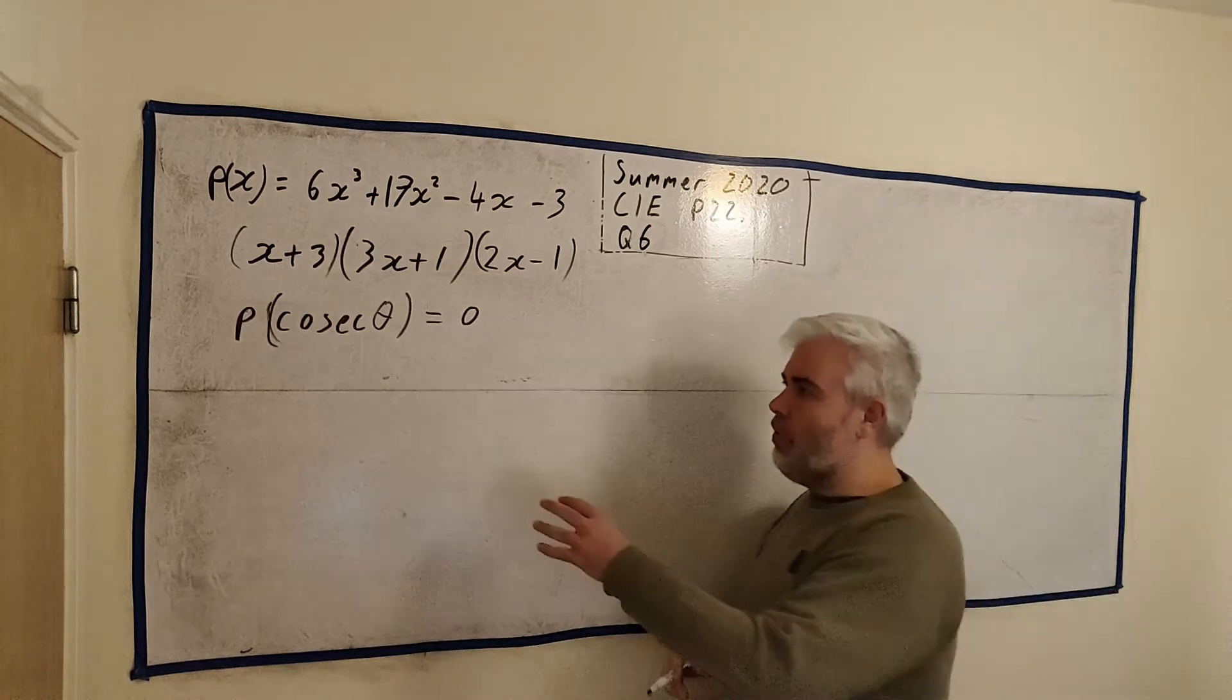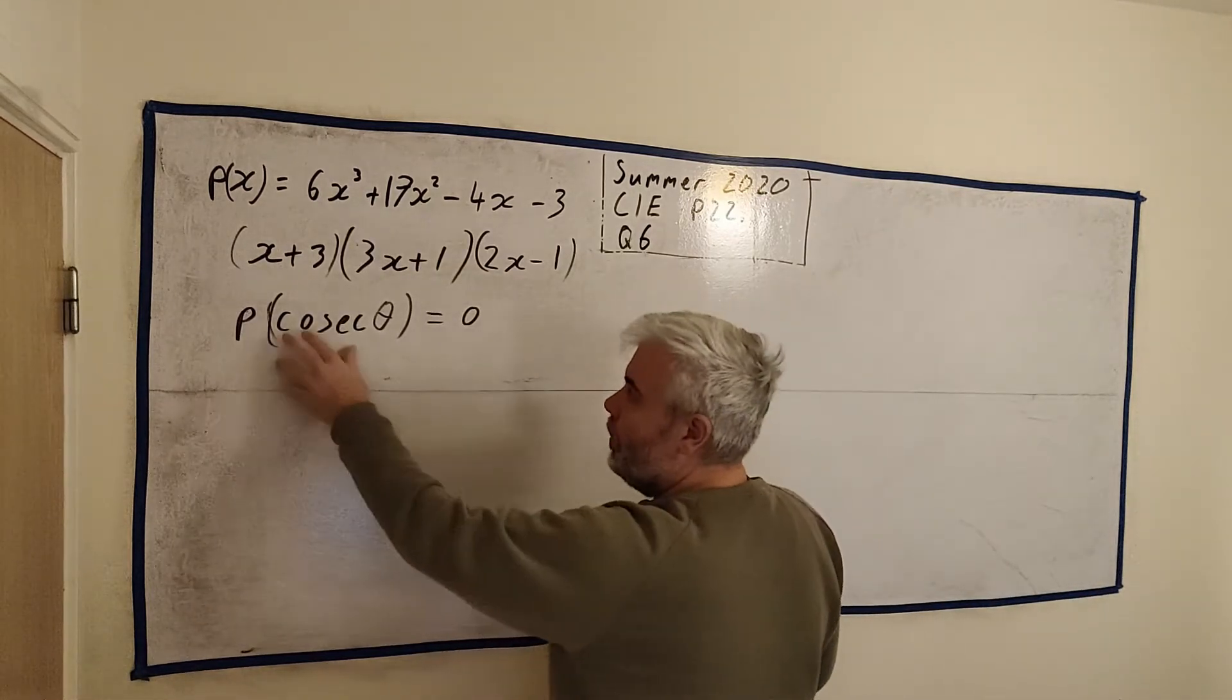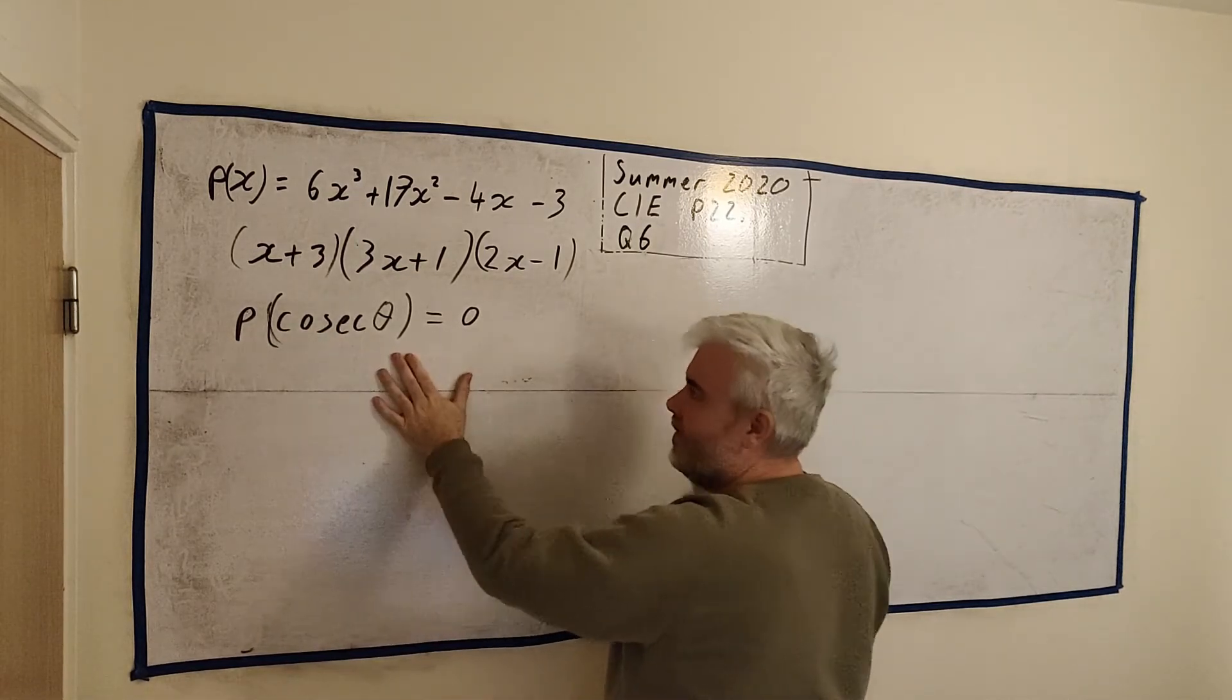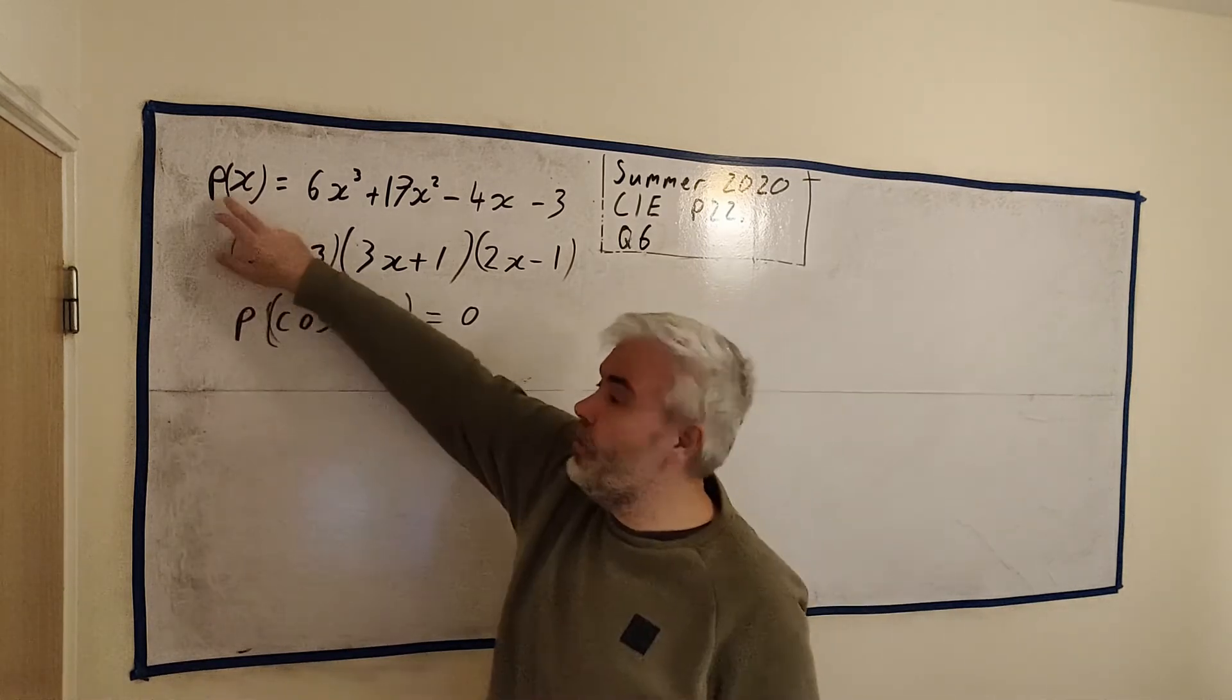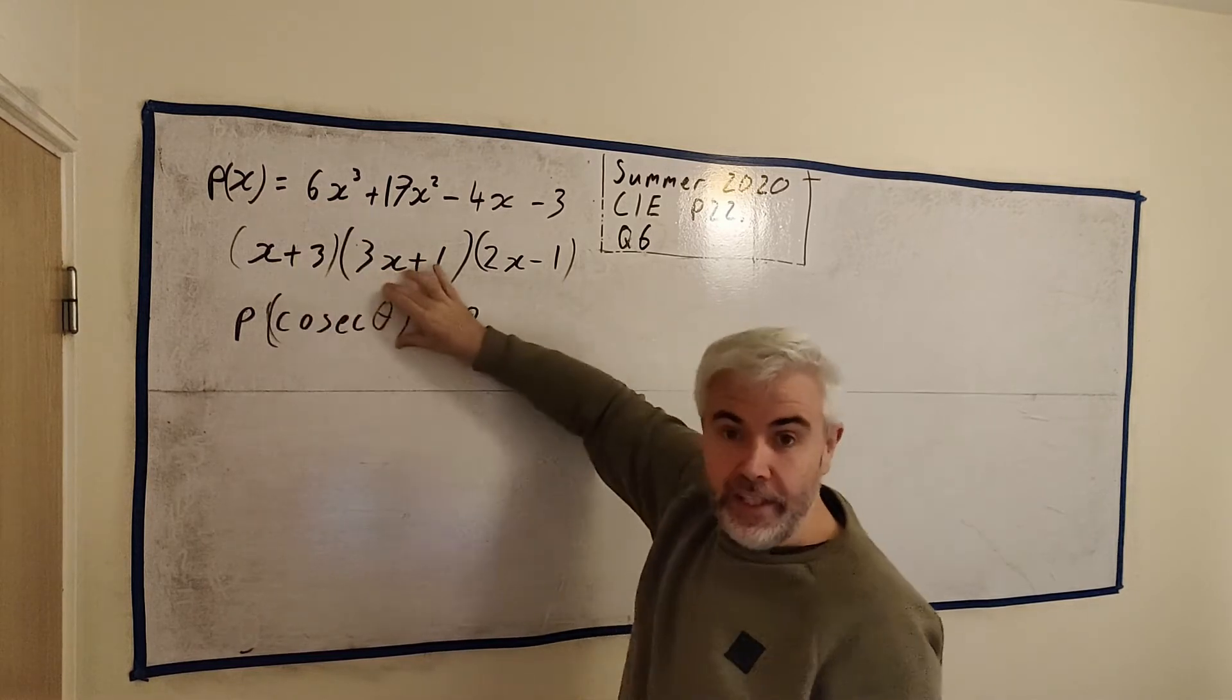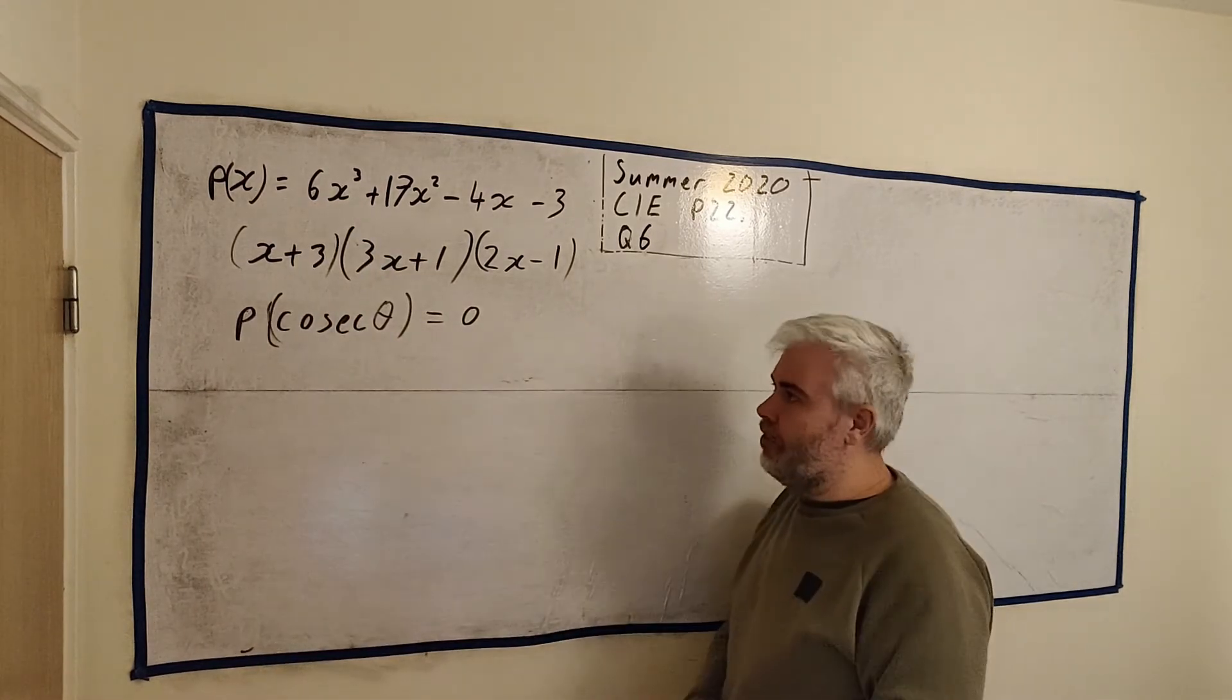Part C gives us this question and the polynomial. So first of all, students were confused by this. P of cosec theta. This is just the same polynomial. Instead of having x in there, we're having this thing. Everywhere you see an x, we're writing this. That's the first thing to confuse people.